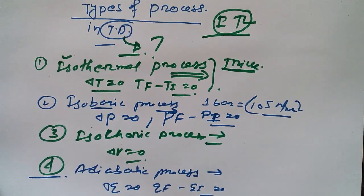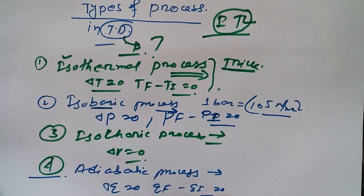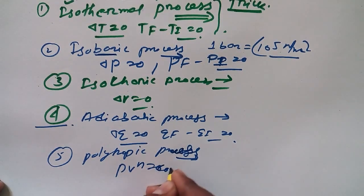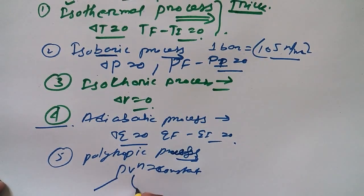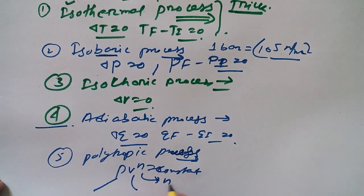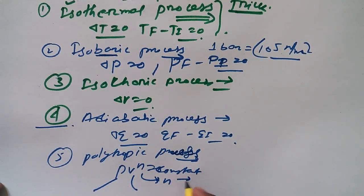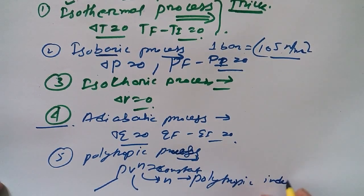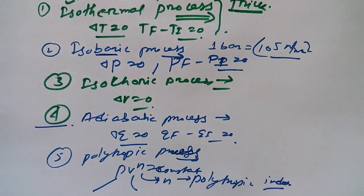What is polytropic process? According to this process, PV to the power n is equal to constant. What is this? P means pressure, V means volume. What is this n? n means polytropic index. Well, thanks for watching. Hope to see you again in my next video. Bye bye.